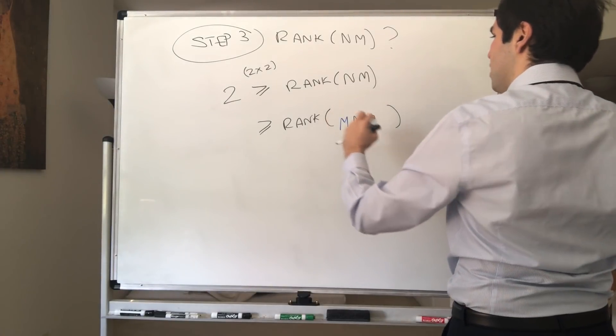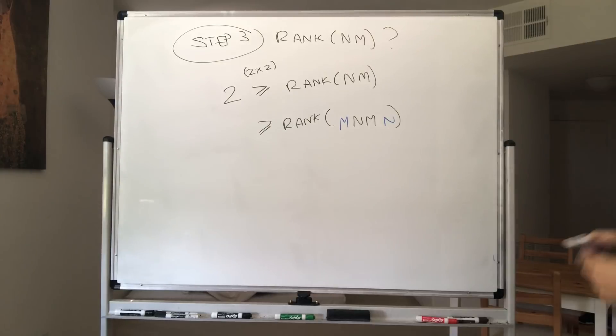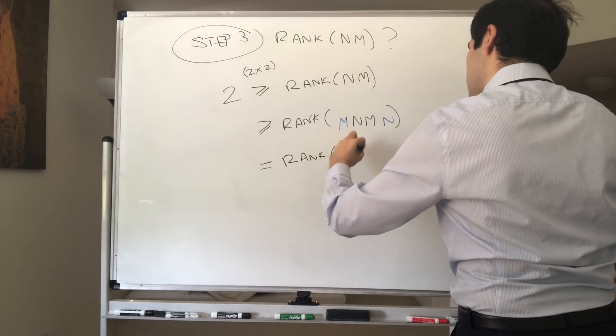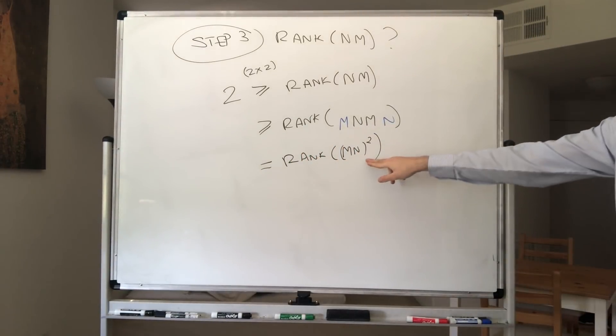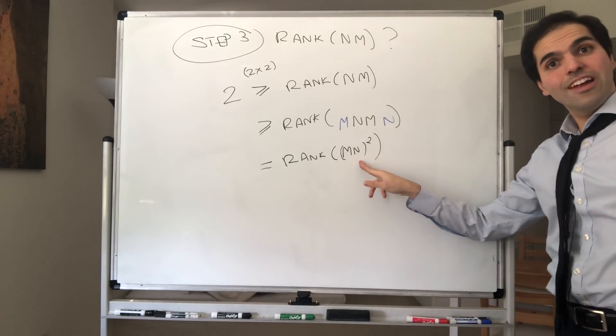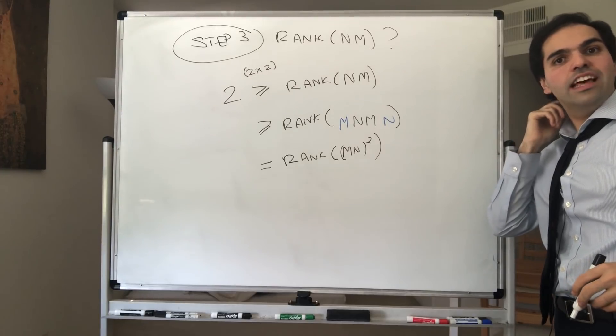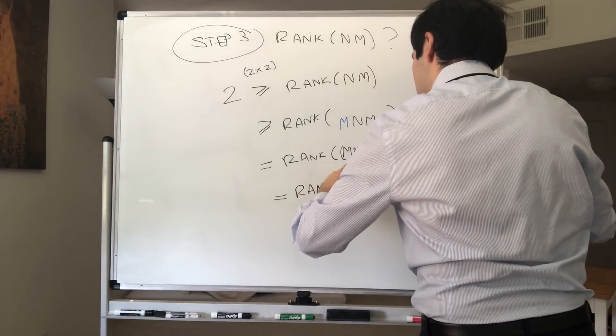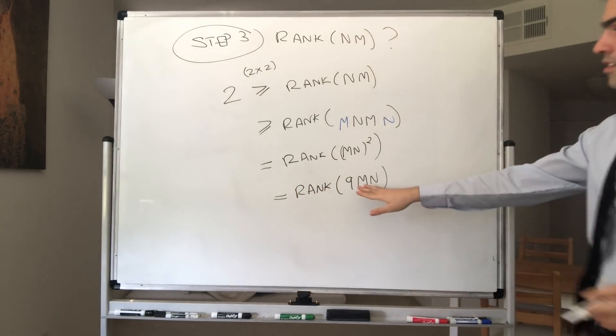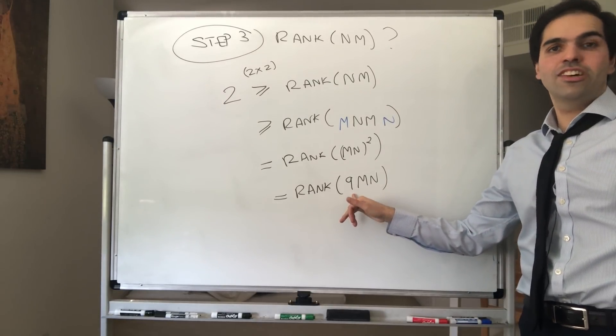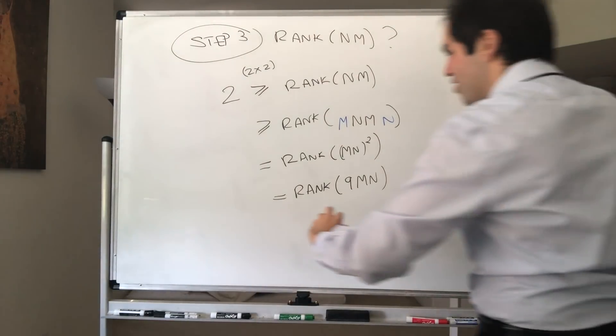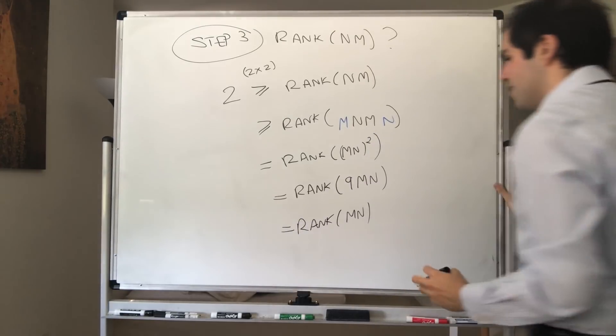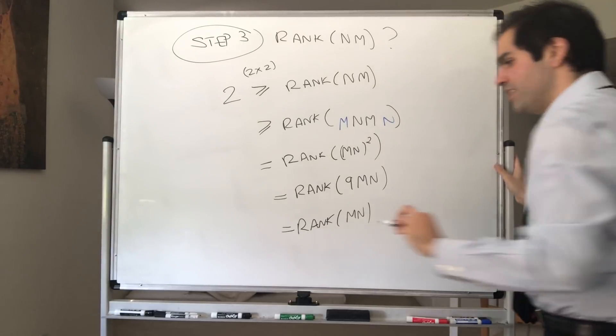So, MN and then MN. However, this is just the rank of MN squared. And remember, we've shown something very nice. We've shown that MN squared is nothing other than 9MN. And since the rank is the number of pivots, multiplying by 9 doesn't change the number of pivots. So this is actually the same as the rank of MN. And we've calculated that rank. We calculated that previously to be 2.